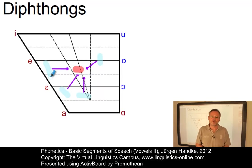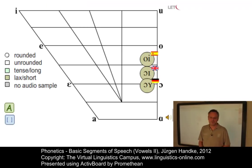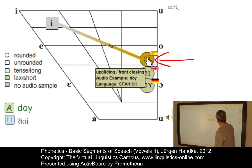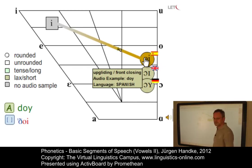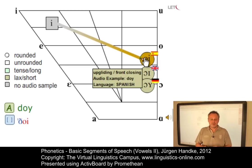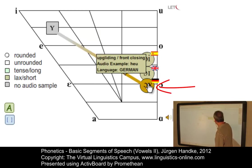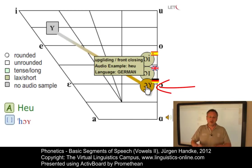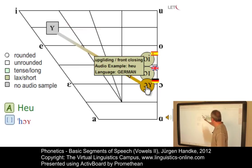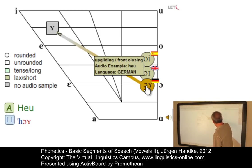Here are three examples of the diphthong OI from the Virtual Linguistics Campus. The OI in Spanish has the highest onset — 'doi' — somewhere between a mid and a mid-high vowel, and it is certainly front upgliding, ending in an unrounded front vowel. The onset of the diphthong OI in German is lower, and the front upglide ends in a high front vowel which involves some degree of lip rounding, as indicated by the symbol used for the offset.